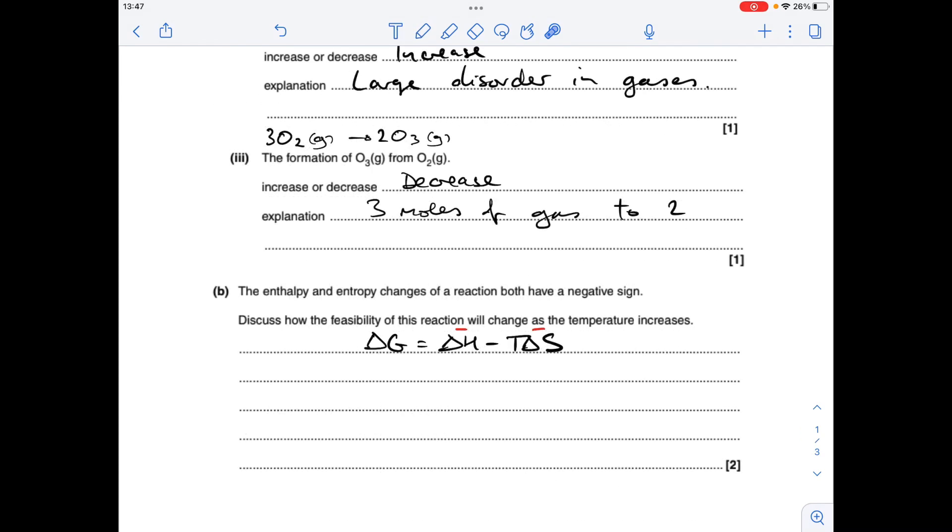Part B now, so we've got to talk about how the feasibility of this reaction will change as temperature increases. So I've put the Gibbs equation in and just a reminder that it's a negative delta H and it's a negative delta S.